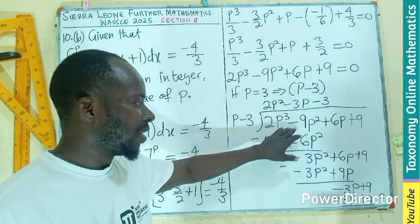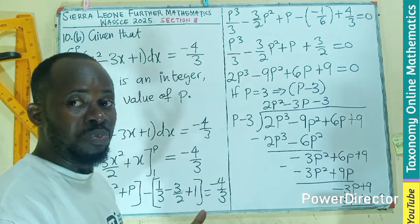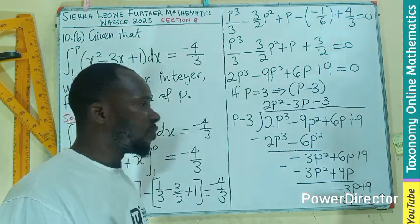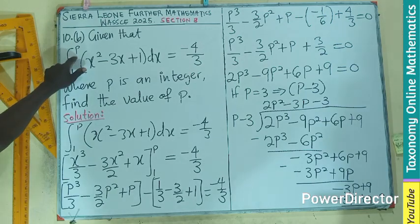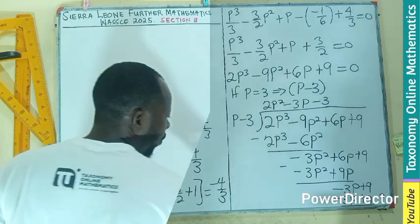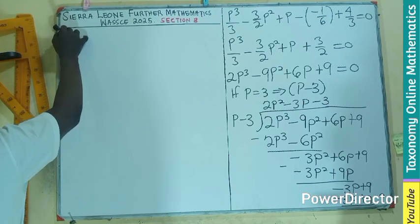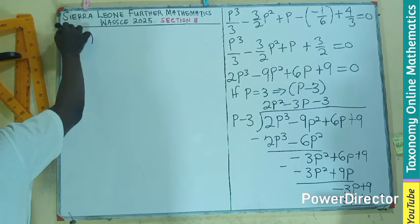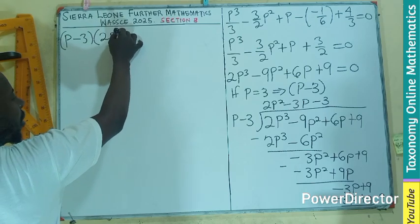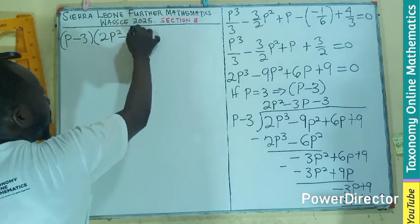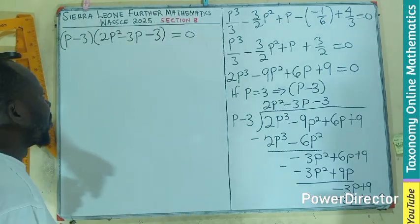Right here, we can easily say that the divisor and the quotient when multiplied will give us this with no remainder. So now let's pick these two and find the values of p that we are going to find the integer that will be used to replace the integral here.